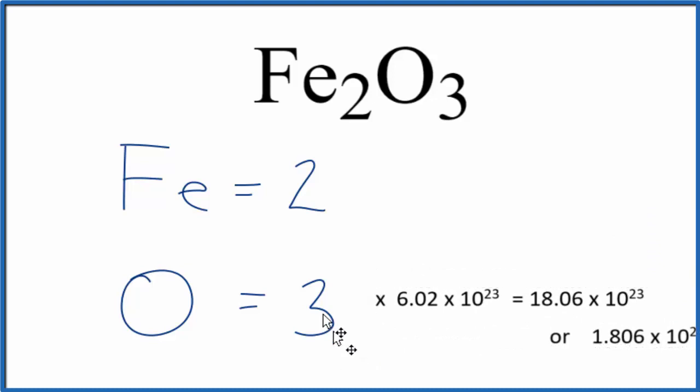So 3 times Avogadro's number gives you this number here, which is the total number of oxygen atoms in 1 mole of Fe2O3. This is Dr. B with the number of atoms in iron 3 oxide. Thanks for watching.